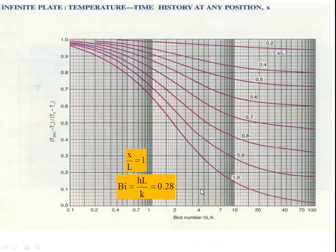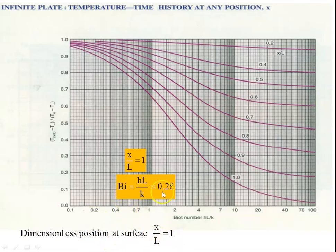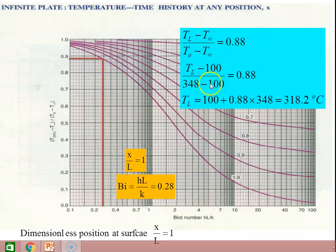To find the surface temperature: dimensionless position at the surface x/L = 1, Biot number = 0.28. Draw a vertical line at Bi = 0.28, meeting the x/L = 1 line, giving a temperature ratio of 0.88. So (T_surface − T∞)/(T_O − T∞) = 0.88. T_surface − 100 / (348 − 100) = 0.88. Therefore T_surface = 318.2°C.